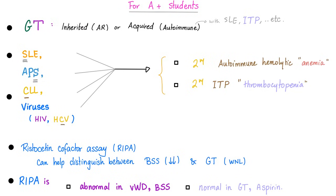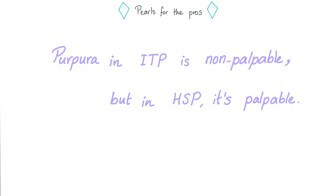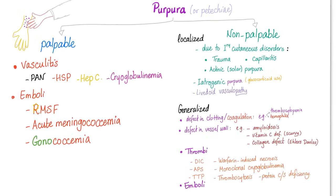Some tips: Glanzmann thrombasthenia can be inherited (autosomal recessive) or acquired — acquired is associated with other autoimmune diseases such as lupus and ITP. Remember that lupus, antiphospholipid syndrome, CLL, and viruses are responsible for secondary autoimmune hemolytic anemia and secondary immune thrombocytopenia. Ristocetin cofactor assay can help distinguish between Bernard-Soulier syndrome and Glanzmann. Remember that purpura in ITP is non-palpable, but in Henoch-Schönlein purpura it is palpable because it is a vasculitis. Vasculitis and emboli cause palpable purpura.